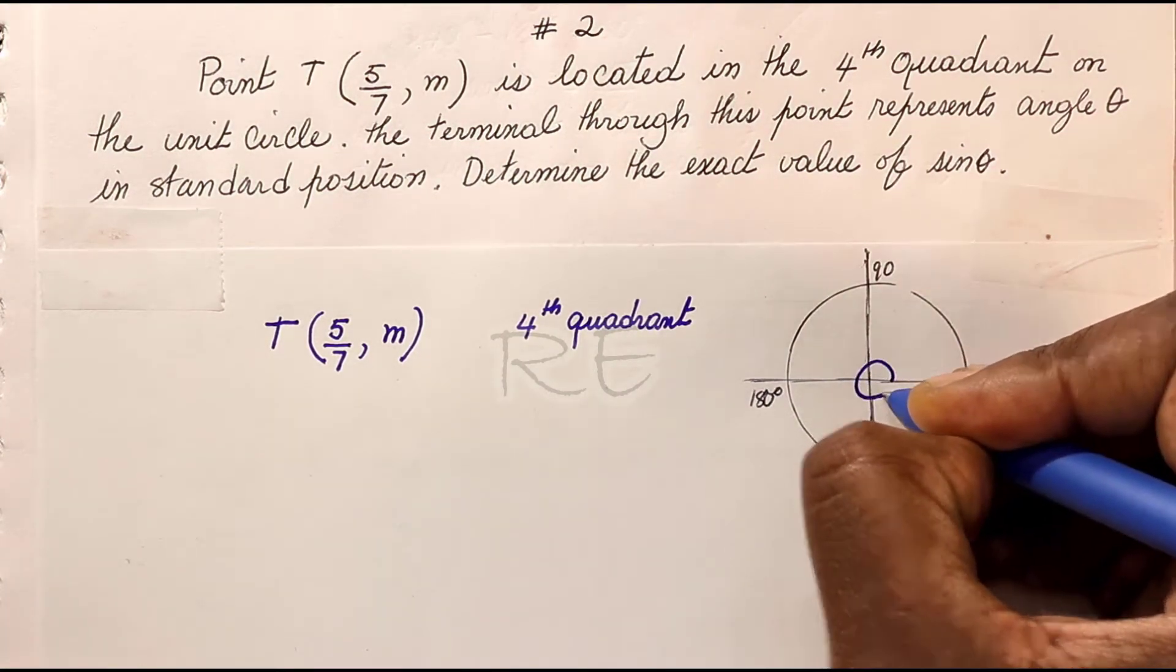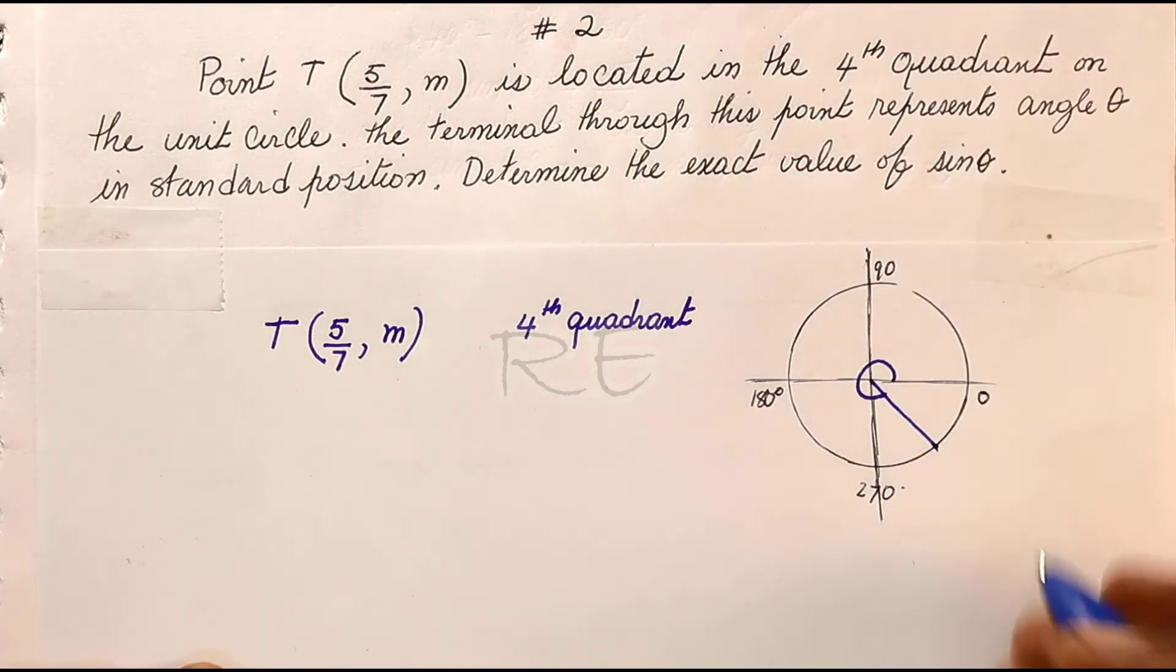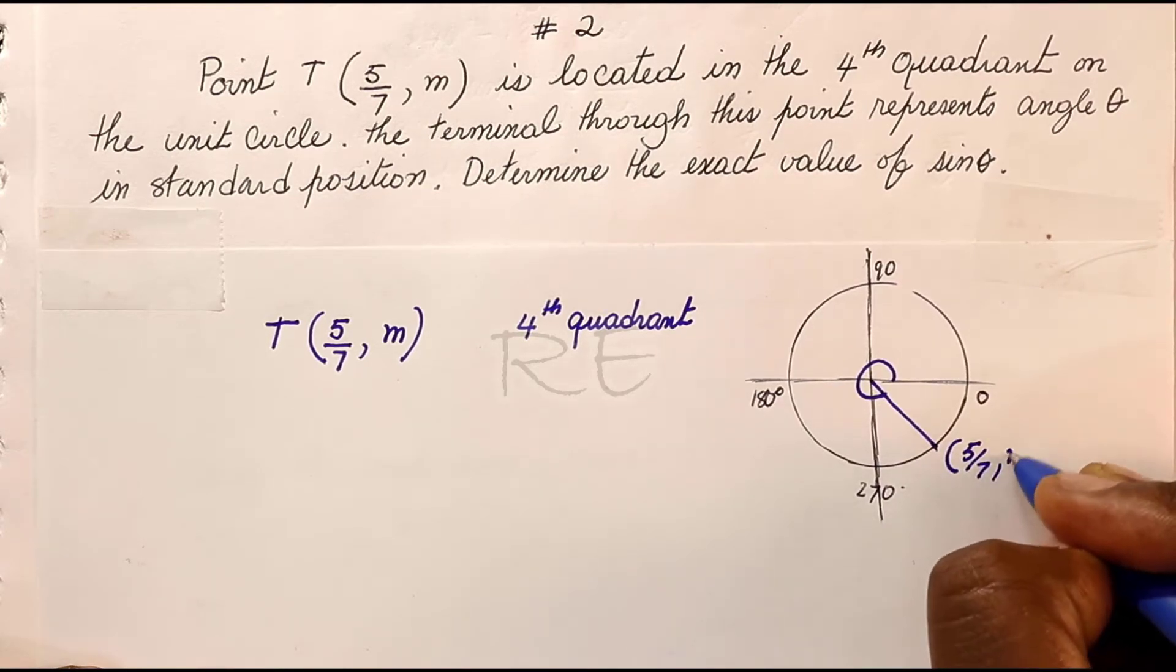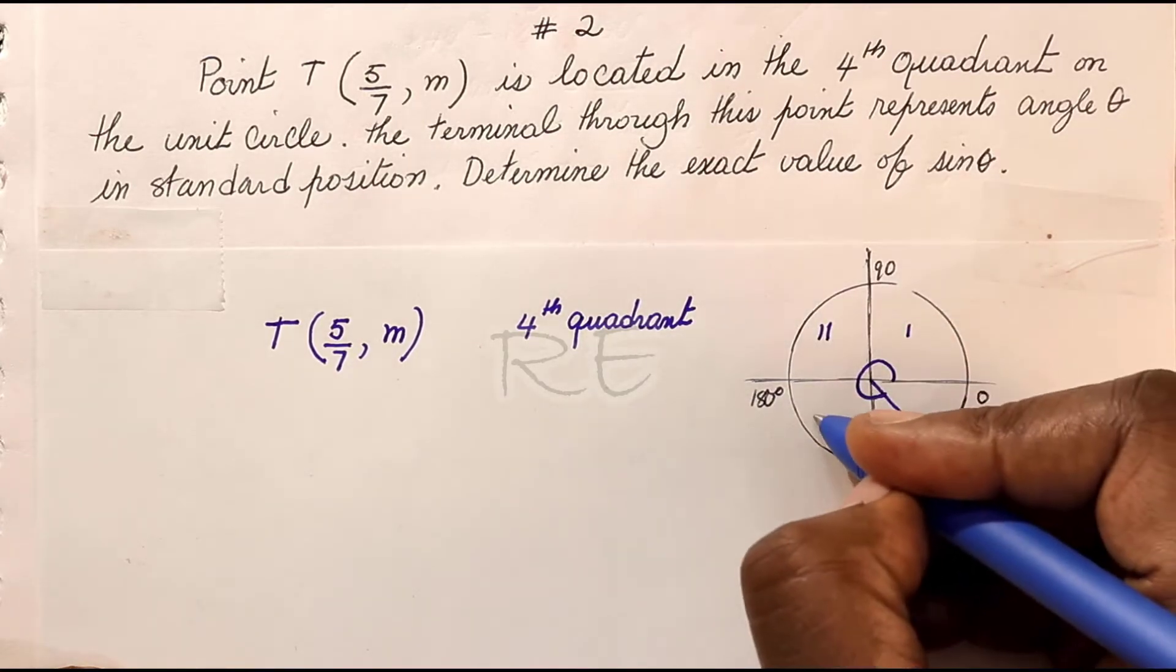Let's just draw it. Okay, so we are in the fourth quadrant and the coordinates are 5 over 7 for cosine and M for sine.